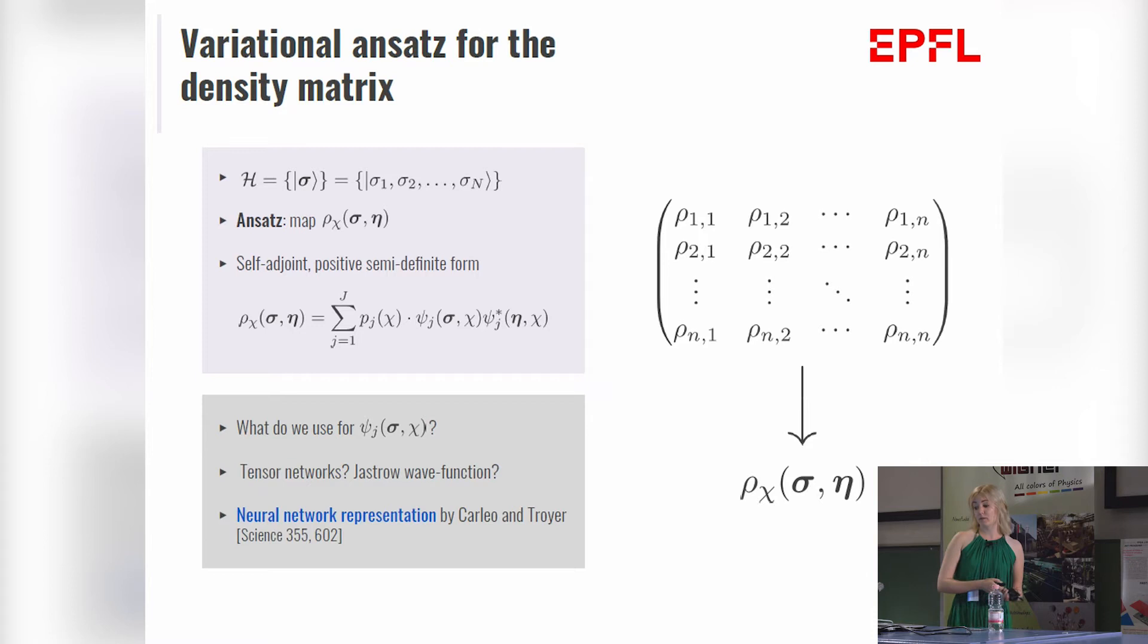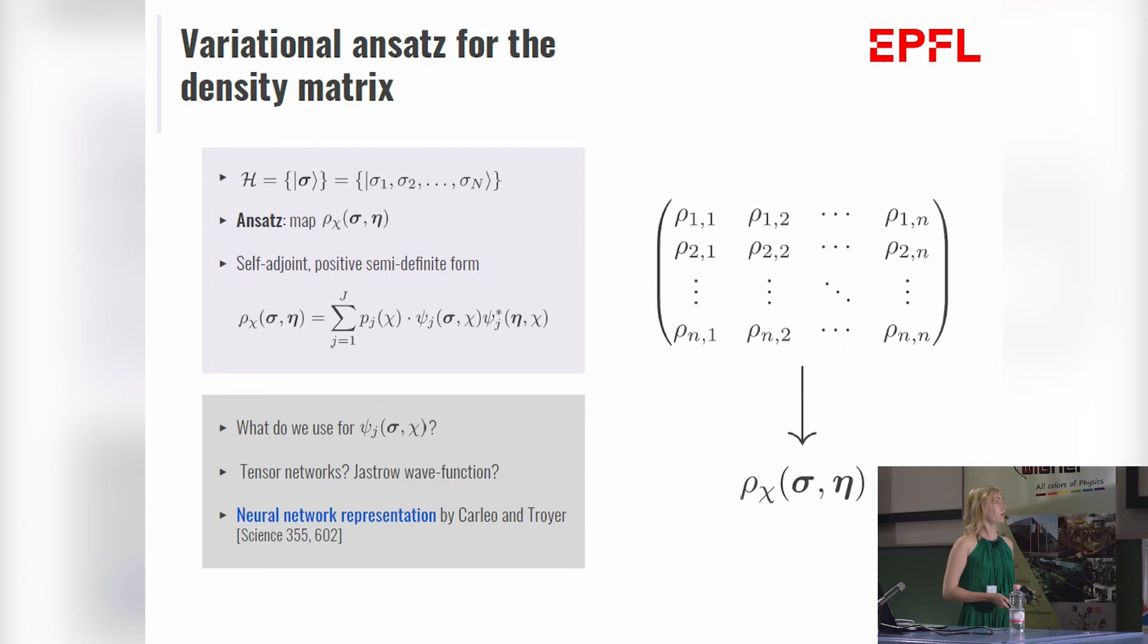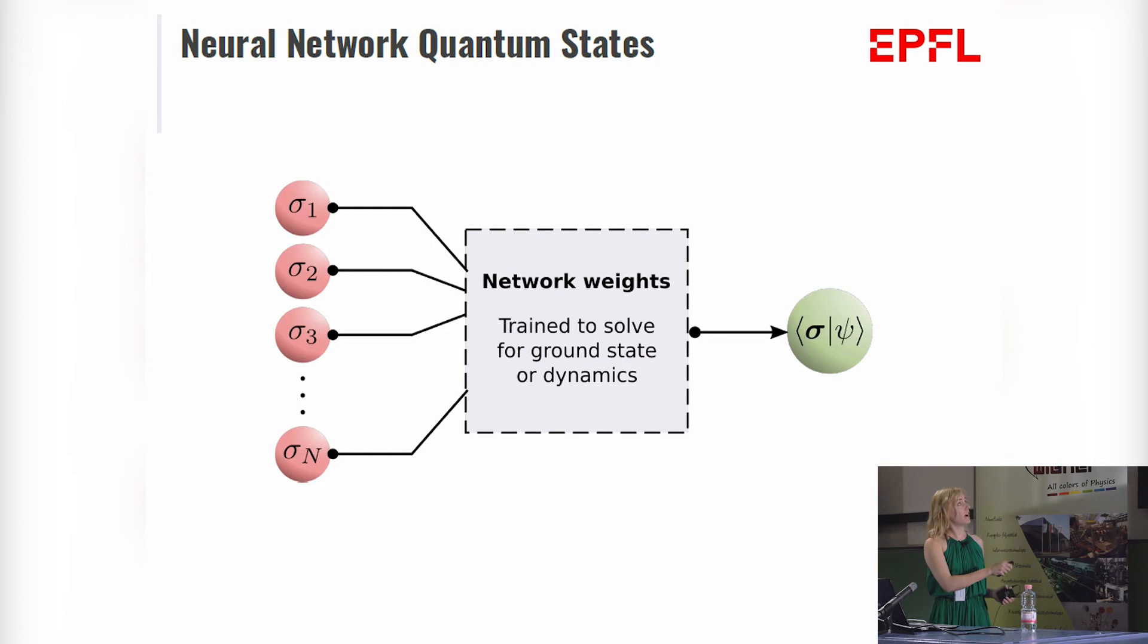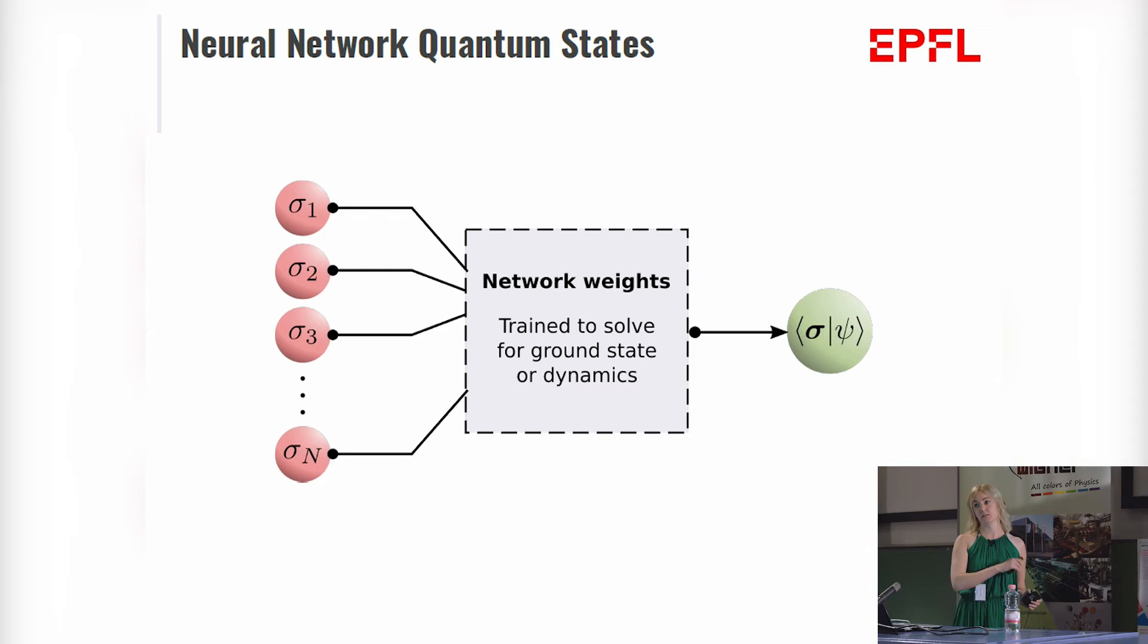So how do we introduce these neural networks? For now, you can just imagine a black box. Input is our spin configuration. We have a network with some weights which were somehow trained to solve for ground state or dynamics, and it will return us a wave function coefficient. There were extensive studies made which neural networks we should use for this purpose,